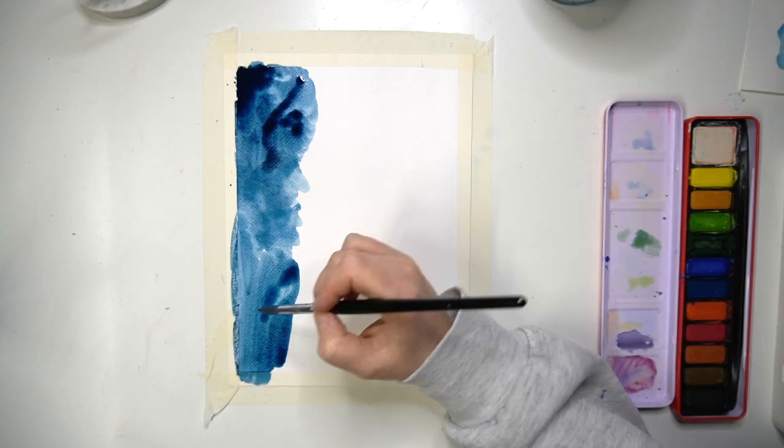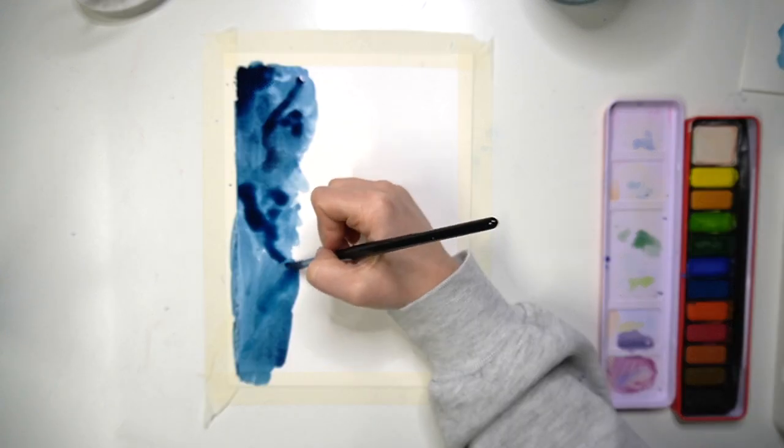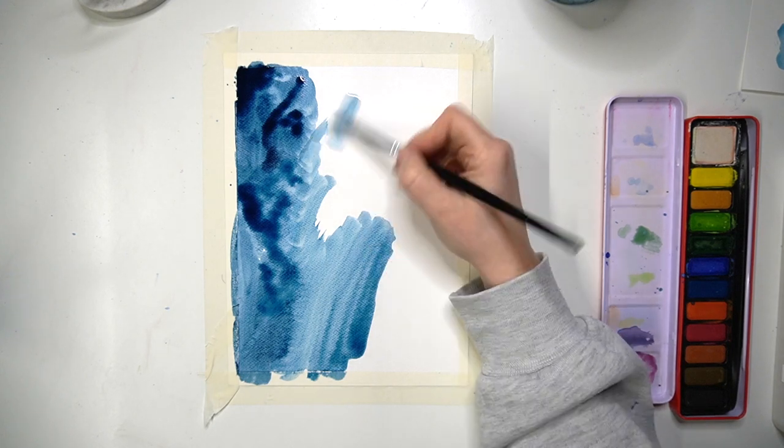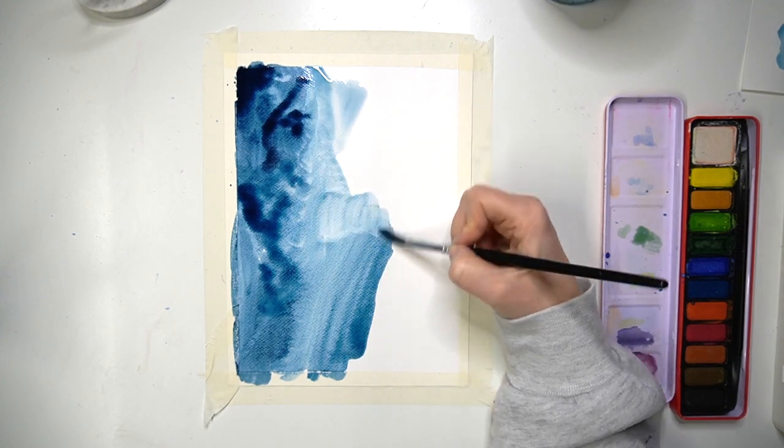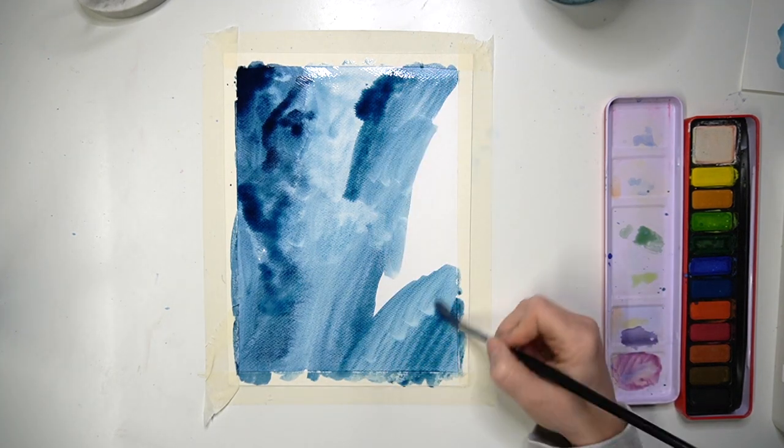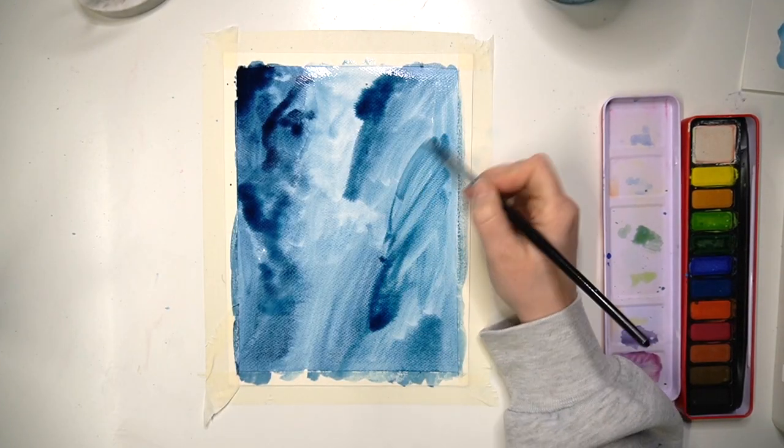For this one I add my paint across my page first using a really light wash. It does look a little bit messy to begin with but it doesn't really matter because we're going to be continuing to work into it until we're happy with how the overall painting looks.